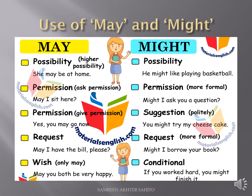'May' is also used for asking permission — 'May I sit here?' — and for giving permission in reply: 'Yes, you may go now.' It is also used for request: 'May I have the bill please?' And for wishes in optative sentences: 'May you both be very happy.' Here the modal verb 'may' shows a wish.